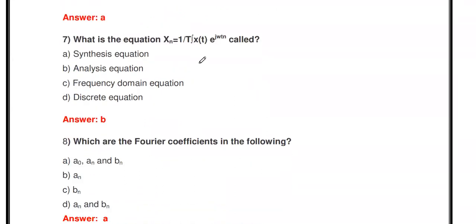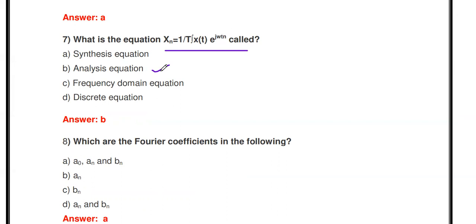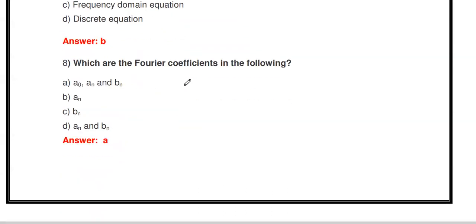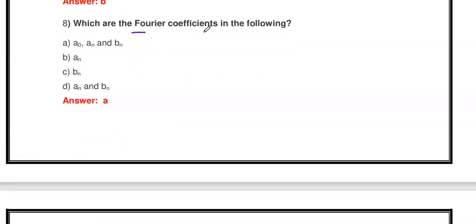Next question: The equation Xₙ = (1/T) ∫ x(t) · e^(jnωt) dt — is this called the synthesis equation, analysis equation, frequency domain equation, or discrete equation? This is the analysis equation. It is the equation used to find the Fourier Series coefficients. The process of converting the time domain signal x(t) into Fourier Series coefficients is called the analysis equation.